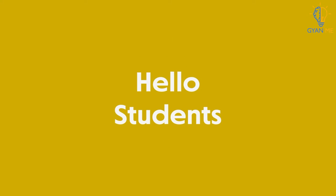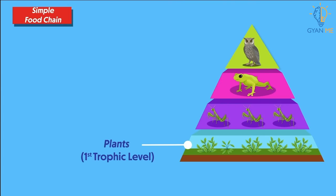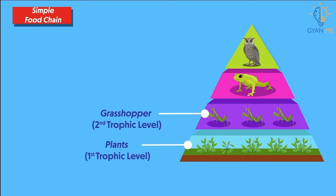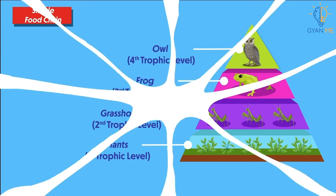Hello students. In our previous video, we learnt about food chain. We know that a food chain is a link between a series of organisms feeding on one another at various trophic levels. A simple food chain basically consists of links between producers, herbivores, and carnivores.